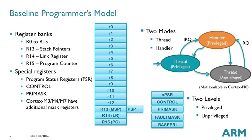In addition to the 16 registers, there are a few special purpose registers. There are the program status registers that provide ALU flags and various process status information. There are also the priority mask, fault mask, and base priority registers used for exception or interrupt masking, and the control register, which defines the selection of stack pointer and access level in thread mode — privileged or unprivileged.